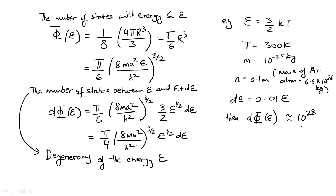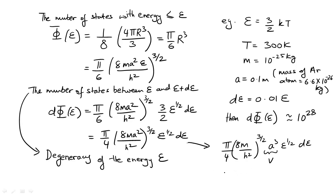The expression dφ can be simplified and written as (π/4)(8m/h²)^(3/2) times ε^(1/2) dε times A³, and since A³ equals the volume, this becomes (π/4)(8m/h²)^(3/2) times ε^(1/2) times volume. This shows that the degeneracy of a particular energy — in other words, the number of ways in which the energy can be arranged — is proportional to the volume of the container in which the particle is.